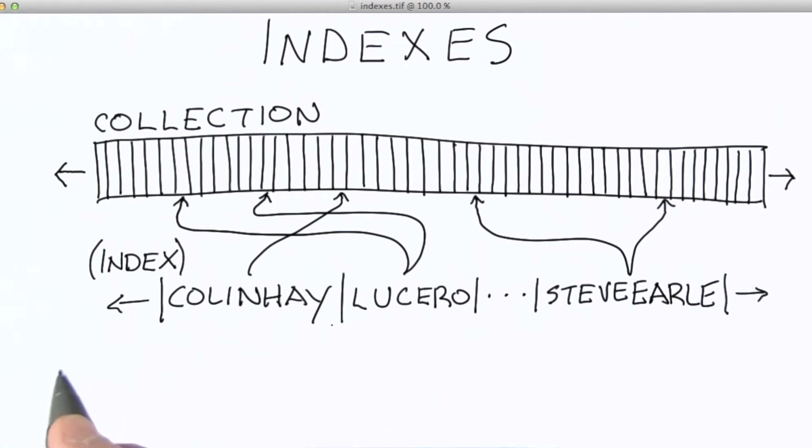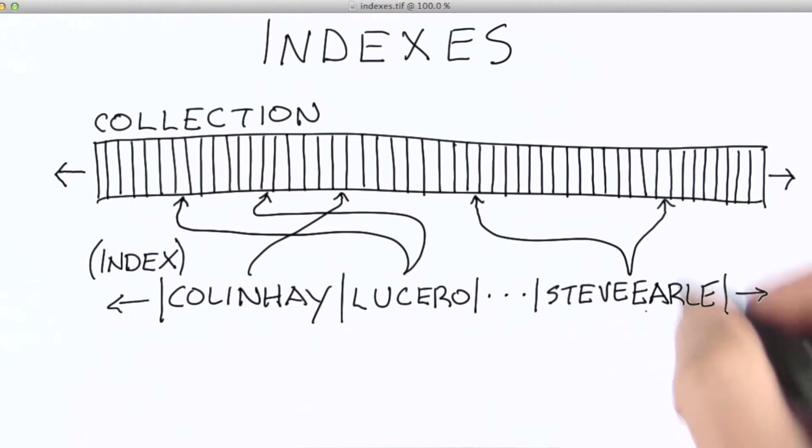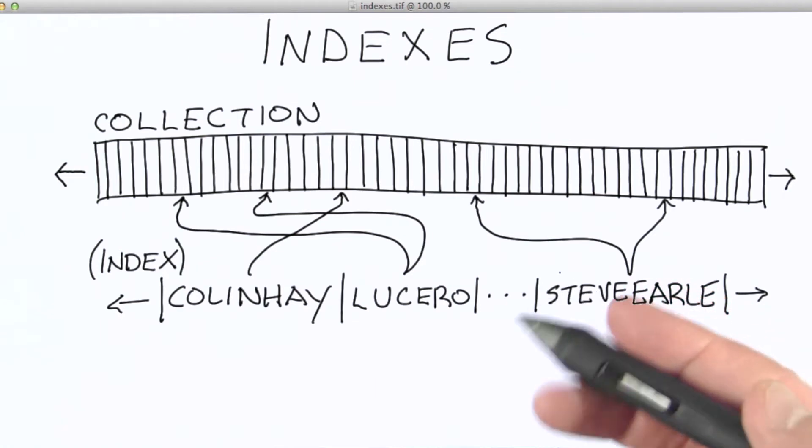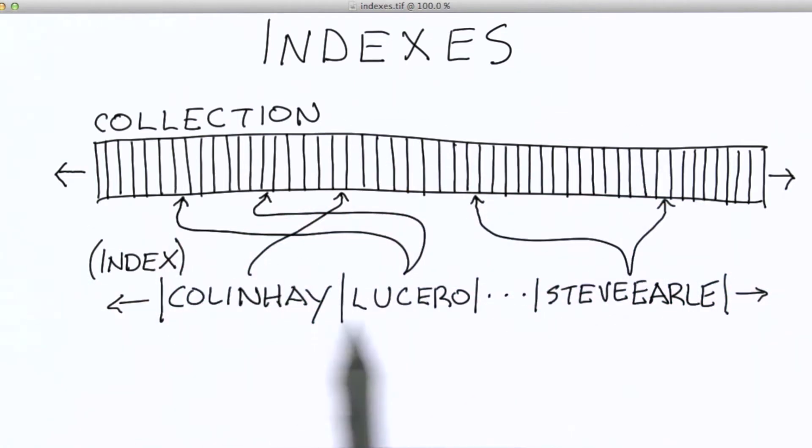Now to create an index, we want to specify a key. An index is simply an ordered list of keys. Now, we don't actually keep them linearly ordered like this in MongoDB. We use something called a B tree. But conceptually, you could imagine it looking like this. It's a perfectly reasonable conceptual model.